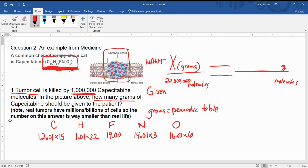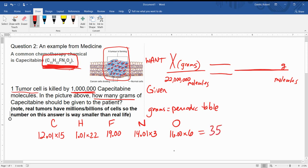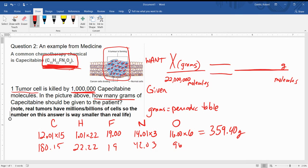And I get, I'm going to double check this real quick, but right now I'm getting 359.40 grams. I'm just going to go back, double check, make sure I typed everything in right. So I've got my carbons, that's 180.15. This is going to be 22.22, plus 19, this is 42.03, and that's going to be 96. Add them all together. Yep, 359.40 grams.